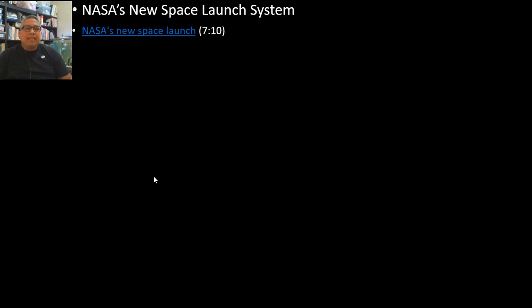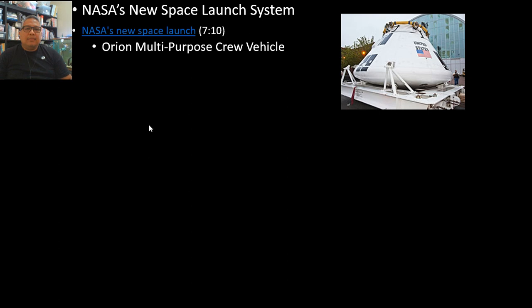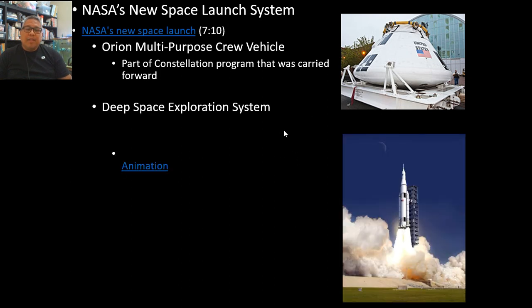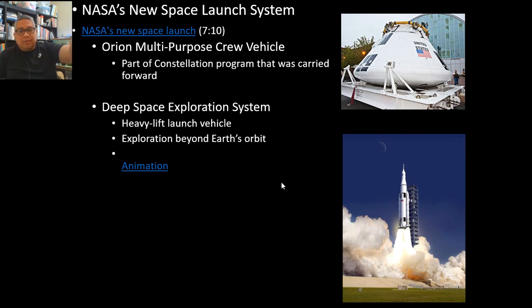Another way of launching is using the Orion Multi-Purpose Crew Vehicle. They're moving towards reusable systems. Part of the Constellation program, they will use this for deep space exploration. It's a heavy lift launch, meaning they will need huge amounts of fuel and huge rockets for exploration beyond Earth's orbit, hoping this will still be reusable.